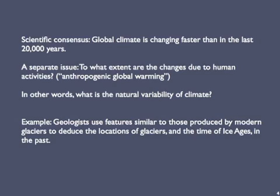Another way to phrase this issue is to ask: what is the natural variability of climate? We know that climate changes naturally. Geologists have long recognized certain landscape features as products of moving glaciers, even where no glaciers are present at the current time. So they use these sorts of features to deduce the locations of glaciers and the time of ice ages in the past. I talk more about this in a later episode, but for now we'll jump to their conclusion.